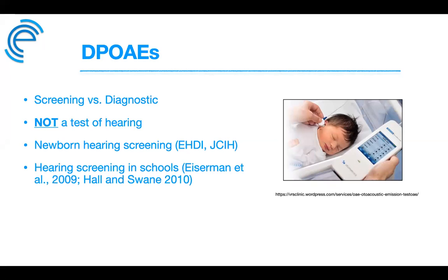Importantly, OAEs are not a test of hearing — this must be clearly communicated to parents. OAEs reflect inner ear mechanics. A normal/pass result indicates normal middle ear and cochlear function, but gives no information about degree of hearing loss. The emergence of automated OAE technology in the late 1990s contributed to the rapid growth of universal newborn hearing screening.